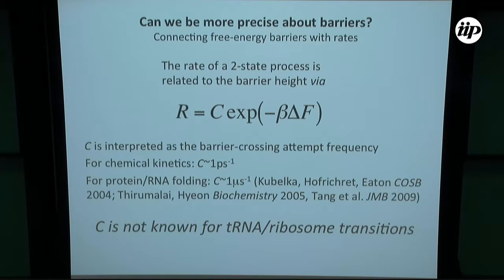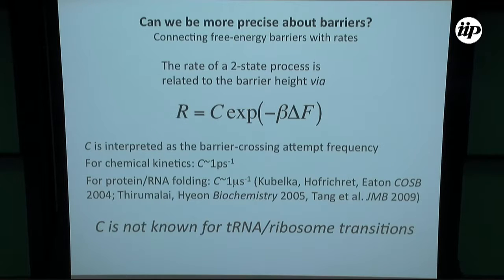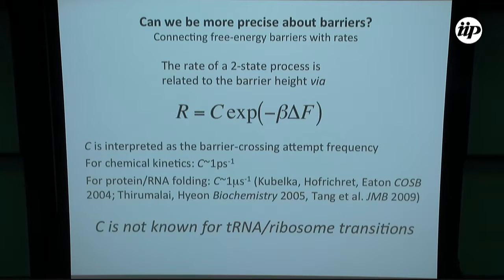This pre-factor is interpreted roughly as a barrier-crossing attempt frequency. If you are looking at different processes, this pre-factor can vary quite a bit. For chemical kinetics it's on the order of inverse picoseconds; for protein folding it's inverse microseconds. So you have this six order or more range of what this parameter could be. You need to be very careful — you can't just take a number and apply it, or you're not going to be able to connect those barriers to any sort of meaningful rate.